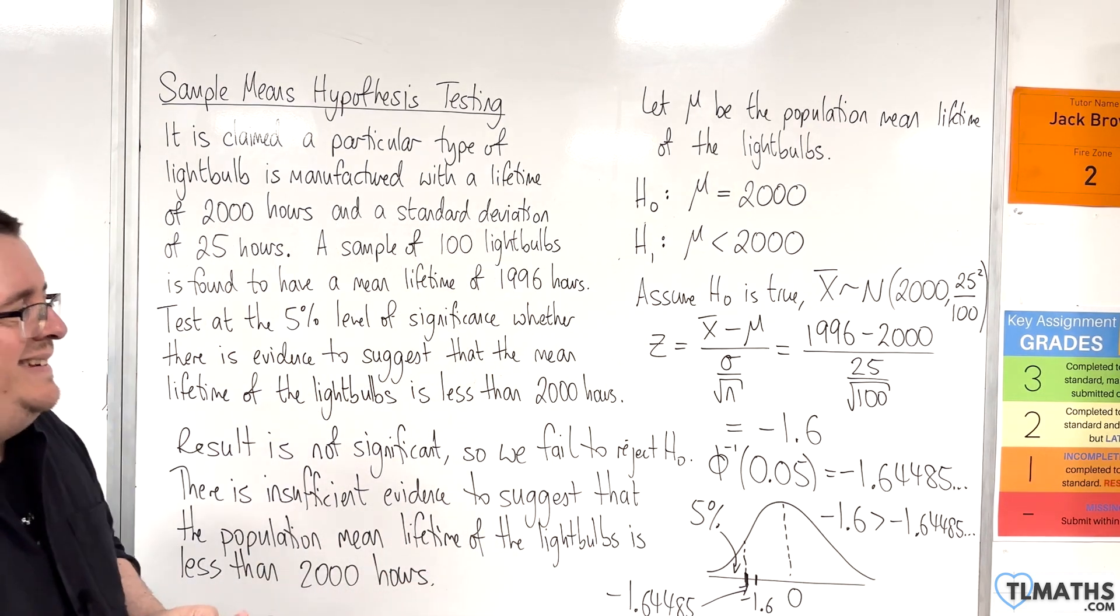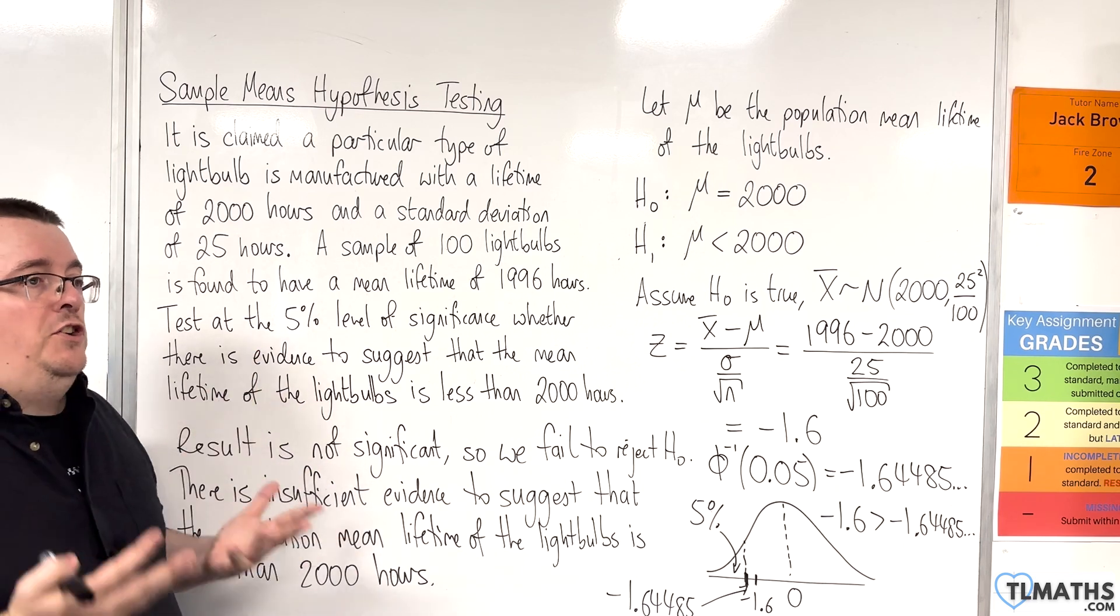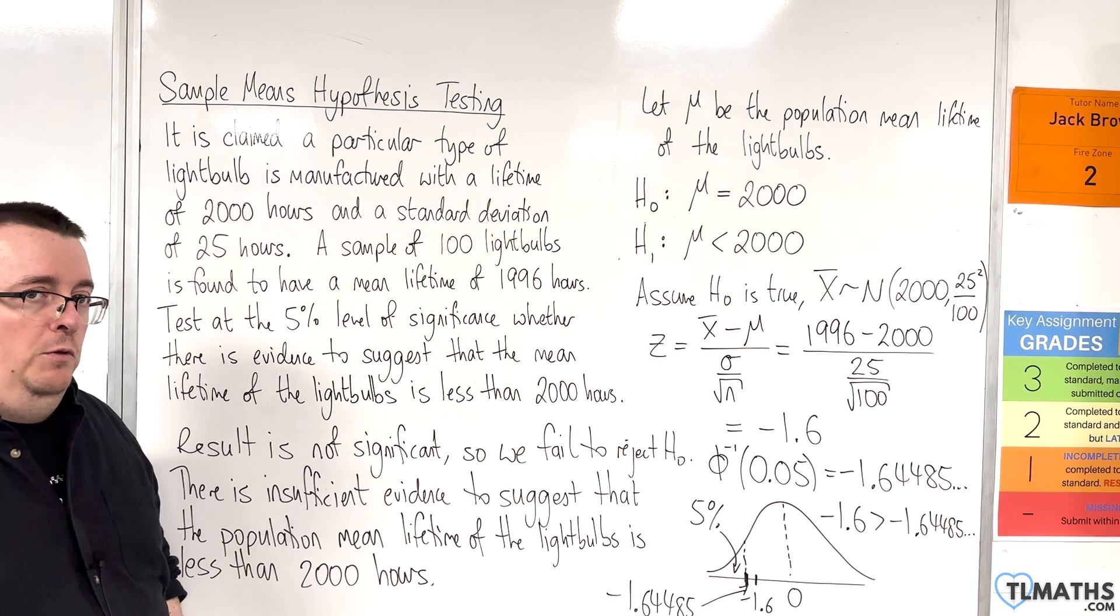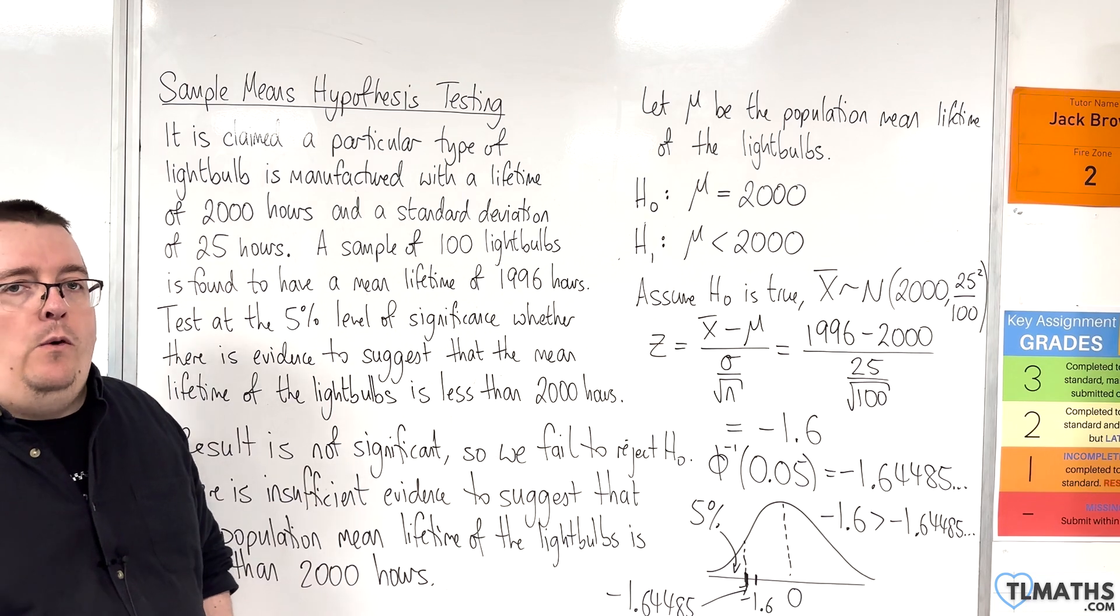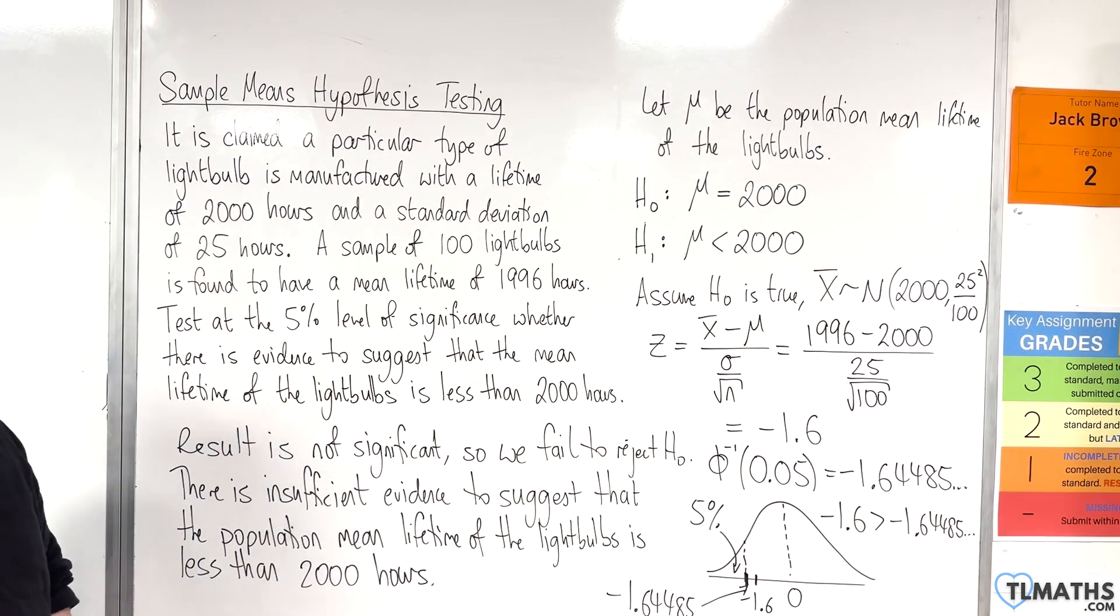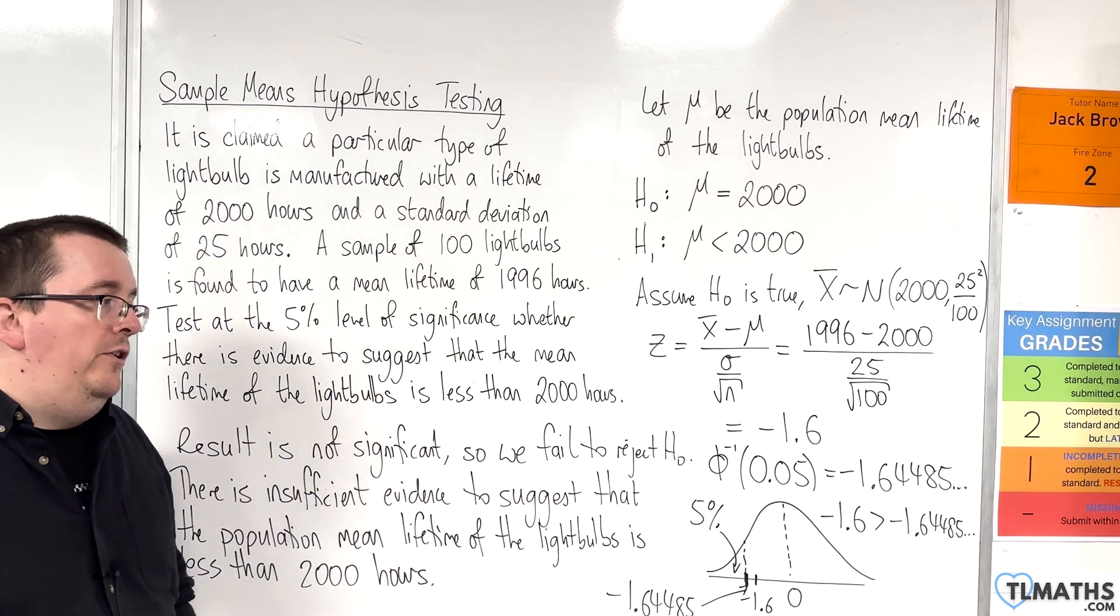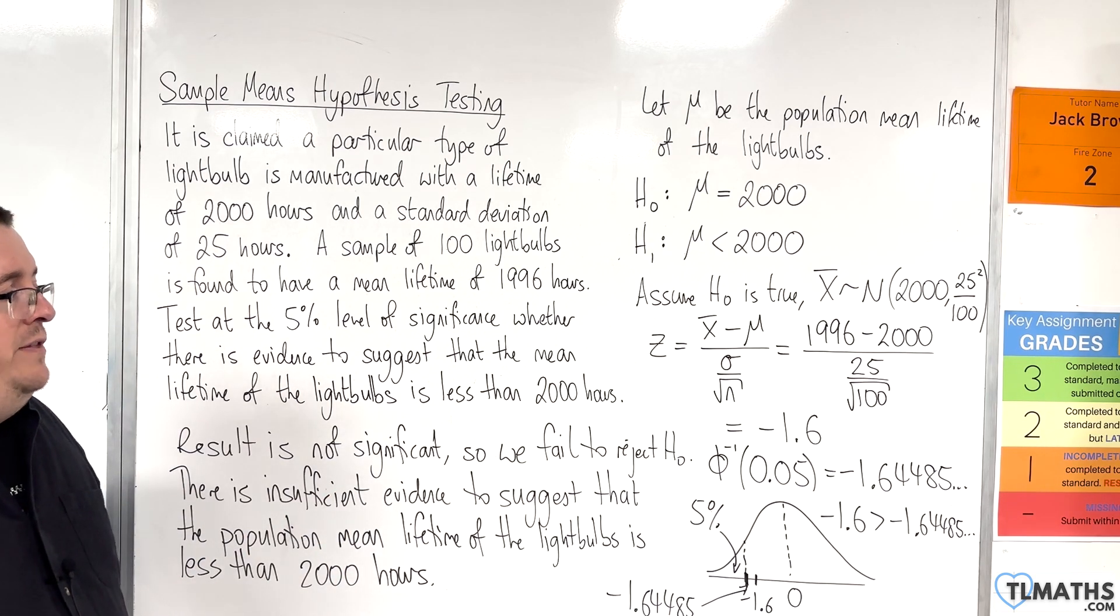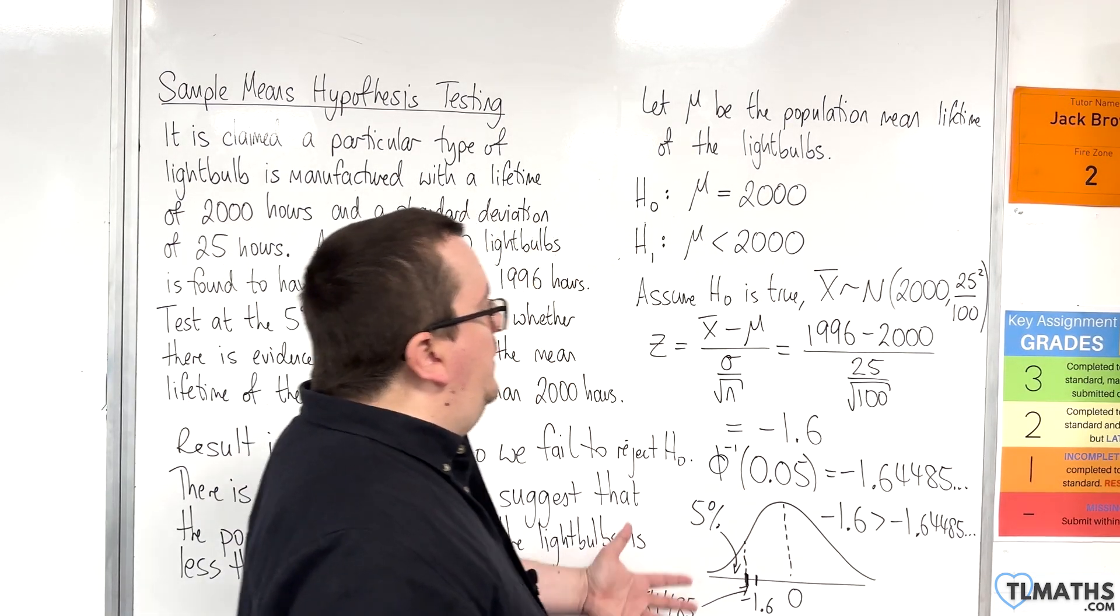So, essentially, the test statistic method is using the critical region method, but converting everything to the standard normal distribution. Why you would choose to do it that way is a little bit weird to me. But, the reason why I'm going through it is because mark schemes have been using it. Mark schemes have shown this method. So, in order to understand what's going on, hopefully, this is helpful.